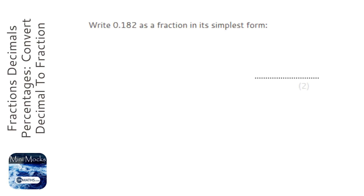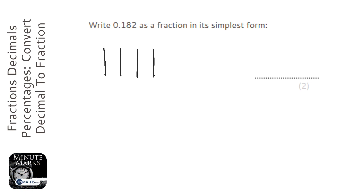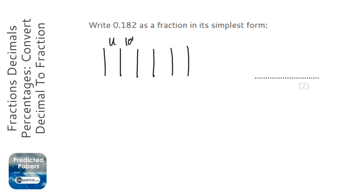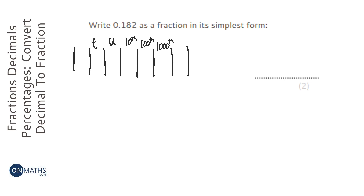The first place to start with this is to remember our columns — it's probably been a while since you've done this. We have a units column, a tenths column, a hundredths column, and a thousandths column. And obviously we also have tens, hundreds, and thousands.